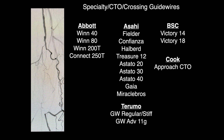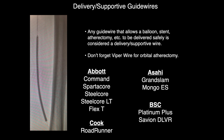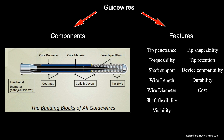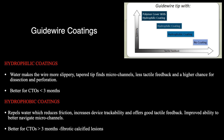The third category is delivery and support guide wires, which allow you to deliver a balloon, atherectomy device, re-entry device, or stent to complete therapy. These can be 0.014, 0.018, or 0.035. Remember: any guide wire that allows you to safely complete therapy can be considered a delivery guide wire. Guide wires are broken down into various components with various features — rather than cover everything, I'll focus on the important basics you should know as you become experts.